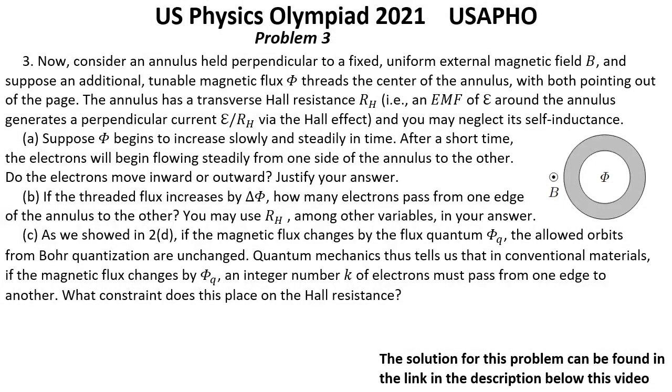Part 3: Now consider an annulus held perpendicular to a fixed uniform external magnetic field B, and suppose an additional tunable magnetic flux Φ threads the center of the annulus with both pointing out of the page. The annulus has a transverse Hall resistance RH, and an EMF of E around the annulus generates a perpendicular current E over RH via Hall effect. You may neglect its self-inductance.